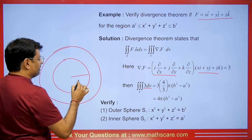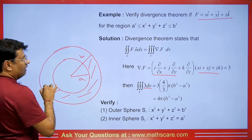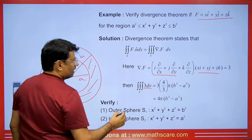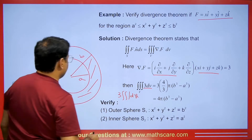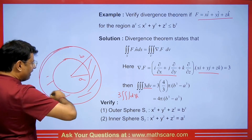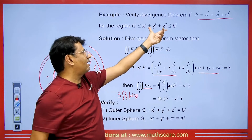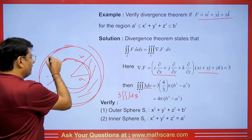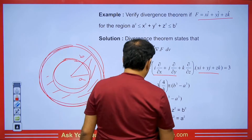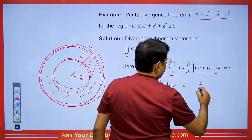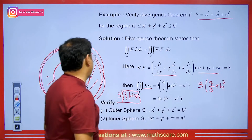We have a spherical shell with inner radius A and outer radius B. The integral becomes 3 times the triple integration of dV. To find the volume of the shell, we subtract the volume of the smaller sphere from the larger one: 3 × (4/3 π b³ − 4/3 π a³). Taking 3 and 4π as common factors, the result is 4π(b³ − a³).